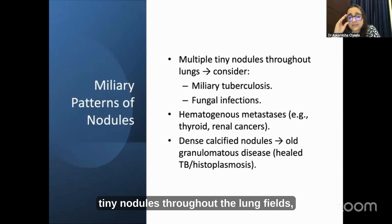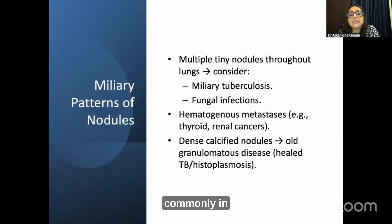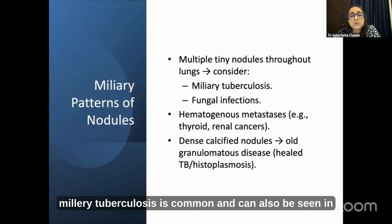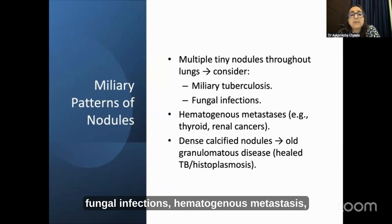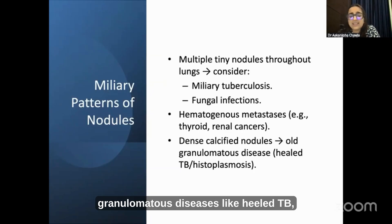The miliary pattern shows tiny nodules throughout the lung fields, commonly 1 to 3 mm in size. Miliary tuberculosis is common and can also be seen in fungal infections, hematogenous metastasis, and dense calcified nodules which are usually old granulomatous diseases like healed TB or old fungal infections like histoplasmosis.